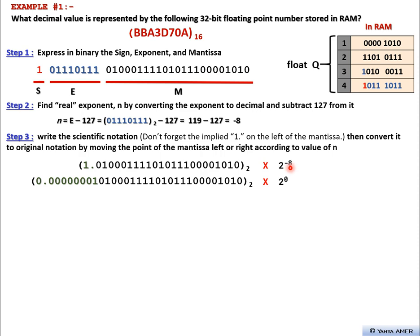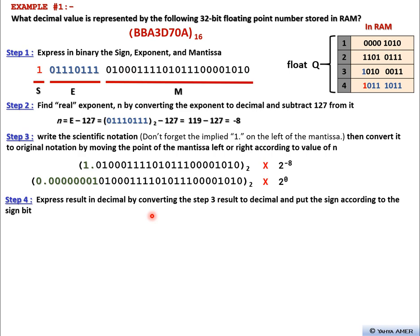Since n is minus 8 — a negative value — we shift the decimal point to the right by 8 places. As you can see, the point was here, and we move it one, two, three, four, five, six, seven, eight places. We put the pointer and the leading zero. This gives us the original notation.